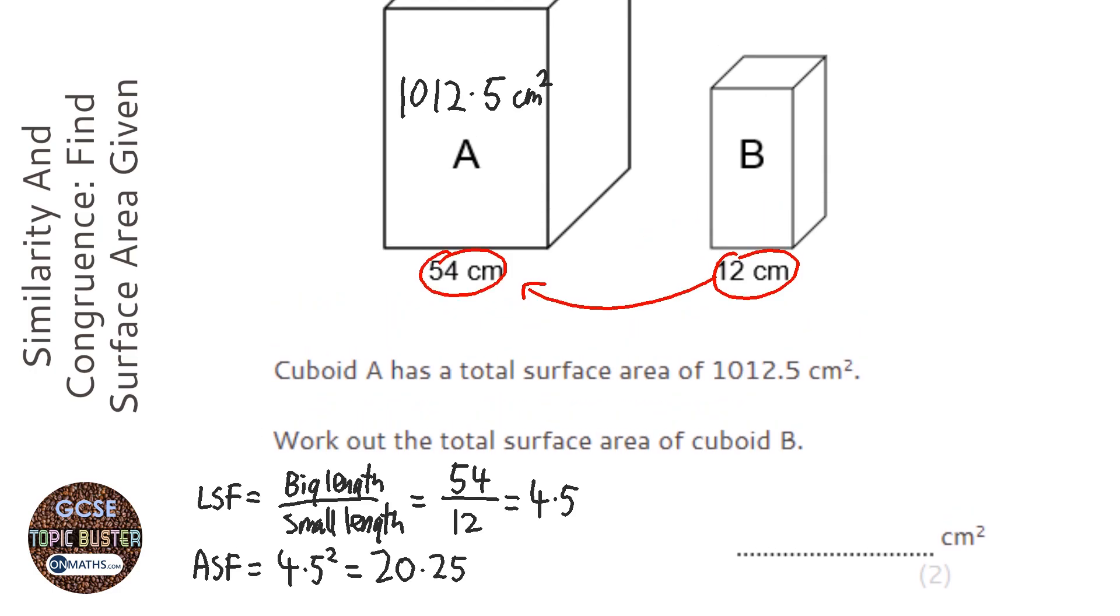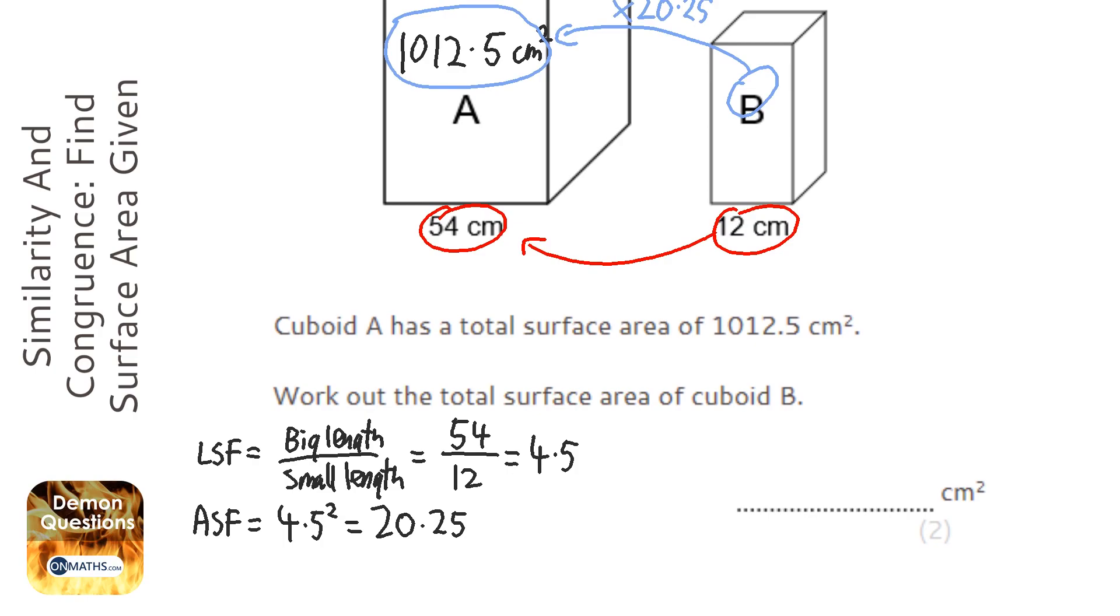Now 20.25 is what I do to this area to get to that area—I multiply by 20.25. But we're going the other way, from big to small, so instead of multiplying, we divide. 1012.5 divided by the area scale factor: 1012.5 divided by 20.25 gives me the answer of 50.